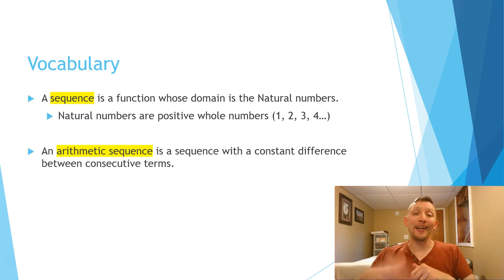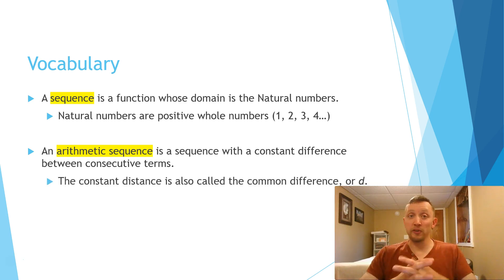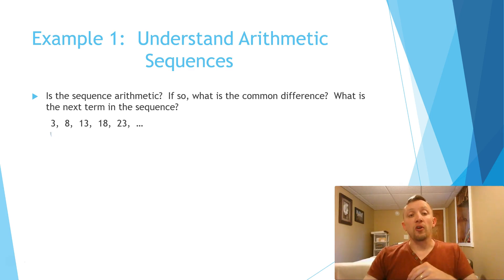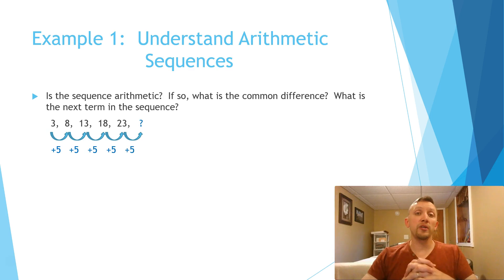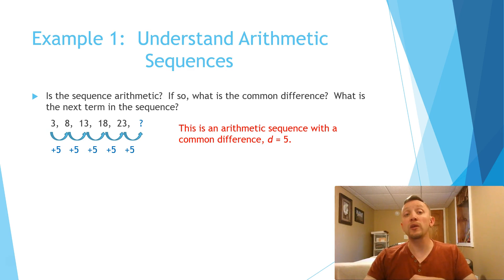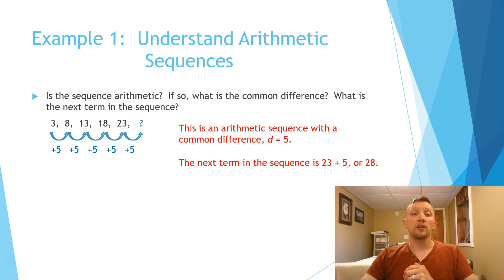An arithmetic sequence is a sequence with a constant difference between consecutive terms. We have a special term for that constant difference — we call it the common difference, and we use the letter d to represent that value. Here's an example: going from 3 to 8, 8 to 13, 13 to 18, and 18 to 23, we're all increasing by 5 each time. So this would have a common difference of 5. Knowing that, we can figure out the next term: 23 plus 5 equals 28, so the 6th term is 28.